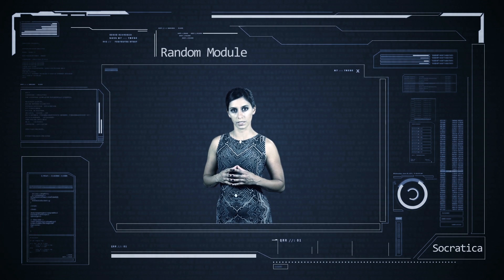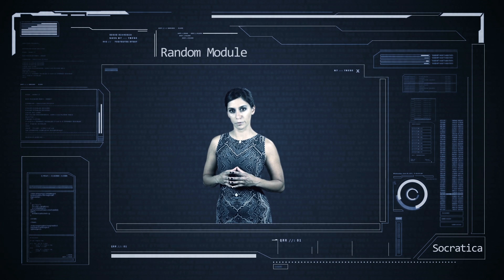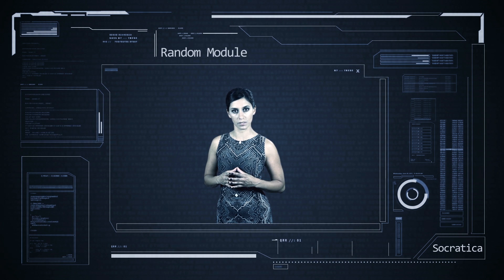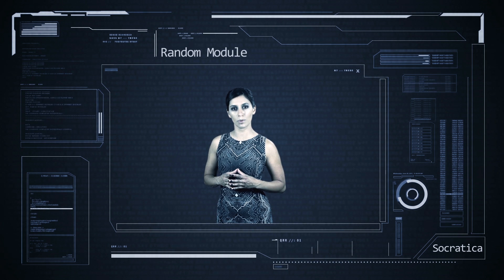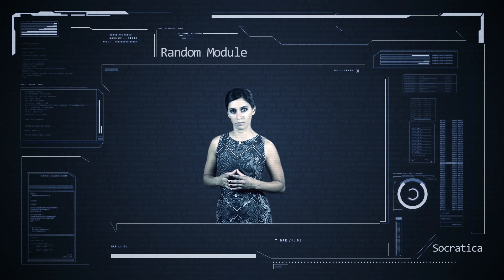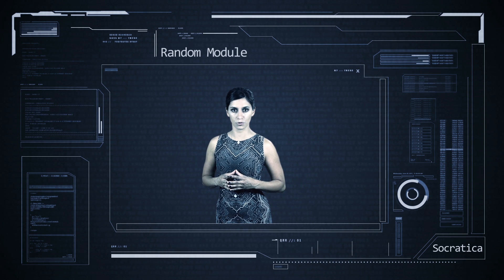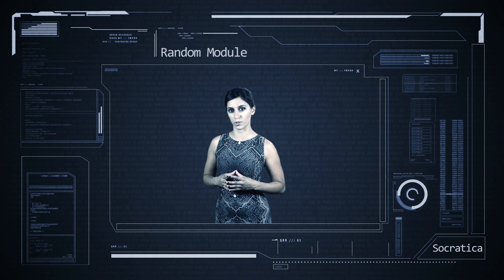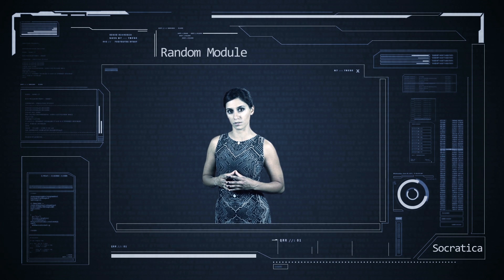The world is a chaotic place. From Heisenberg's uncertainty principle to the butterfly effect, our lives are fraught with randomness. Python understands this and comes equipped with a random module which gives you a wide variety of functions for generating random numbers. This is useful if you want to add unpredictability to your games or if you want to run Monte Carlo simulations.